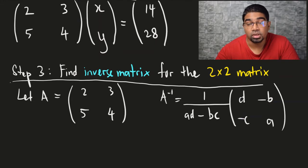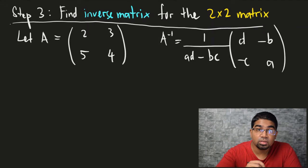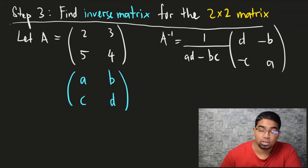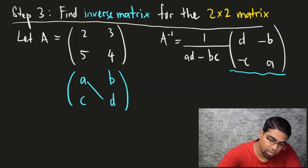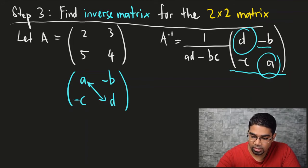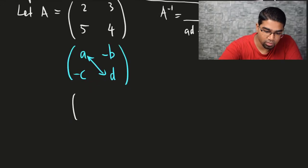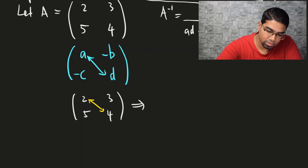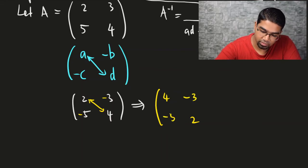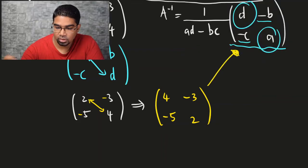But what does it mean and how do you use it? The original matrix before finding the inverse is arranged as A, B, C, D. So if you look at the inverse matrix, what is being done is: A and D are being swapped — it becomes D and A. And then we add a negative to B and a negative to C, giving us negative B and negative C. So let's do that to A. We have 2, 3, 5, and 4. A and D will switch places, so you will get 4 and 2. And then all we have to do is add a negative to 3 and 5, so we get negative 3 and negative 5. This is the second portion of the inverse formula.